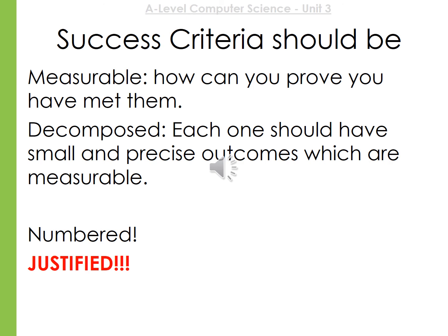The success criteria need to be decomposed — broken down into small sections. For example, if you have a game with a character, you might have movement as one factor, automatic movement depending on where the user is going, and the character appearing and disappearing at certain points — each of these could be a different success criterion. It is useful to number them so you can refer back throughout your project. Make sure you justify each success criterion, and look at some sample success criteria before you start.